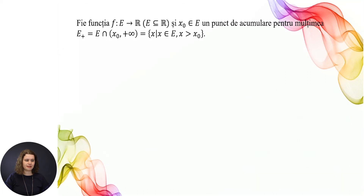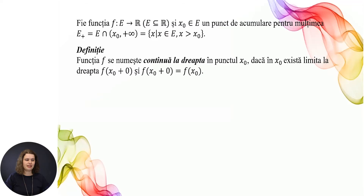Fie funcția f din E în R, E ⊂ R, și x₀ aparține lui E, un punct de acumulare pentru mulțimea E⁺, care este egală cu E intersecție cu intervalul (x₀, +∞), adică toate valorile lui x, x aparține lui E și x este strict mai mare decât x₀. Funcția f se numește continuă la dreapta în punctul x₀, dacă există limita la dreapta f(x₀ + 0) și această limită este egală cu valoarea funcției în punct, adică f(x₀ + 0) = f(x₀).